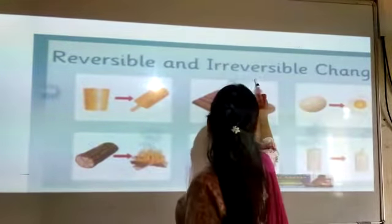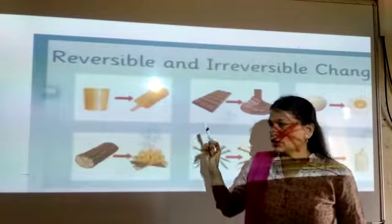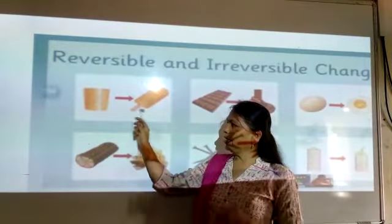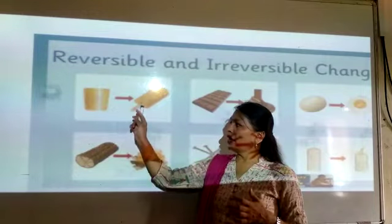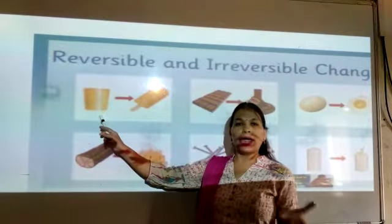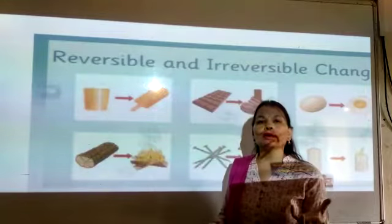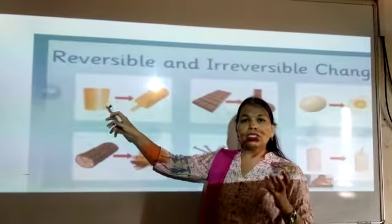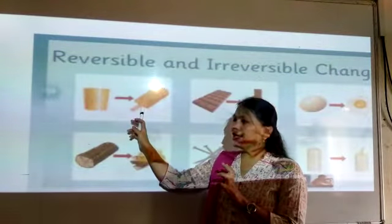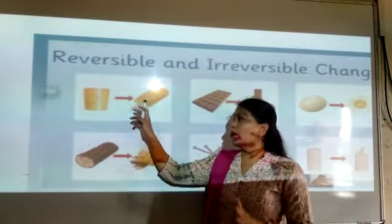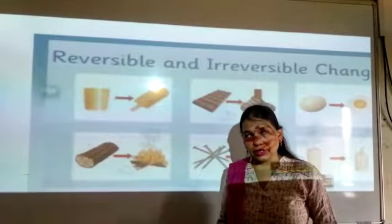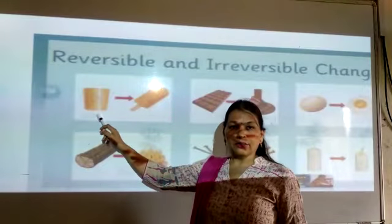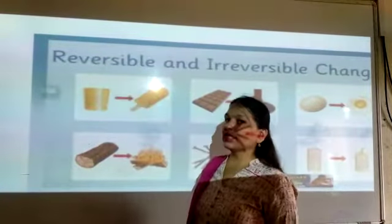Next topic: reversible and irreversible changes. We have already seen this in the previous video. Here, candy is made from milk — some colors are added to the milk, and it is filled into a candy shape. After putting it in the refrigerator, it can be converted into the candy shape. But when we take the candy out of the refrigerator and put it at room temperature, it starts melting and is converted back into milk. That is a reversible change.